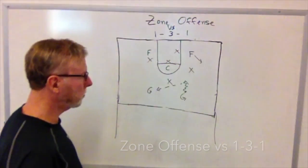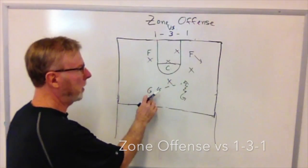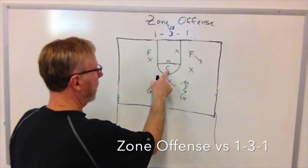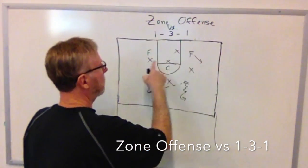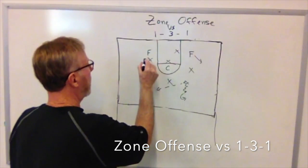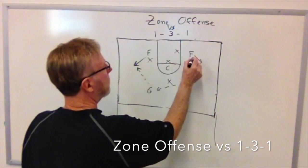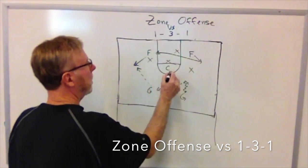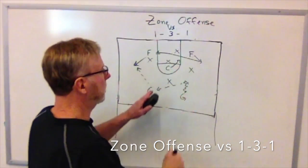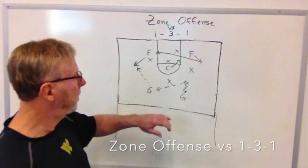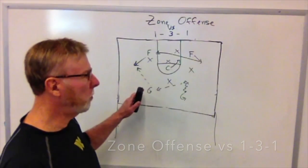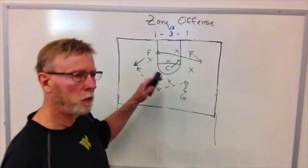Against the 1-3-1 we'll face pressure and may dribble into a double team. We need to make a good pass out to the side or hit the center. Once the pass goes to a forward, the other forward comes across. We're playing these triangles against the 1-3-1, moving the ball and driving the gaps. We want to counter the 1-3-1 zone defense with a 2-1-2 offense.